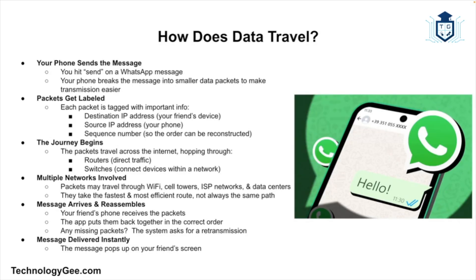Let's go over a simplified explanation of how data actually travels. Say you send a WhatsApp message to a friend across town. First, your phone breaks the message into small packets, and each packet is labeled with destination information and sent through the internet. The packets travel through routers and switches, hopping from one network to another. Your friend's phone receives the packets, reassembles them, and the message appears on their screen — all within a split second.